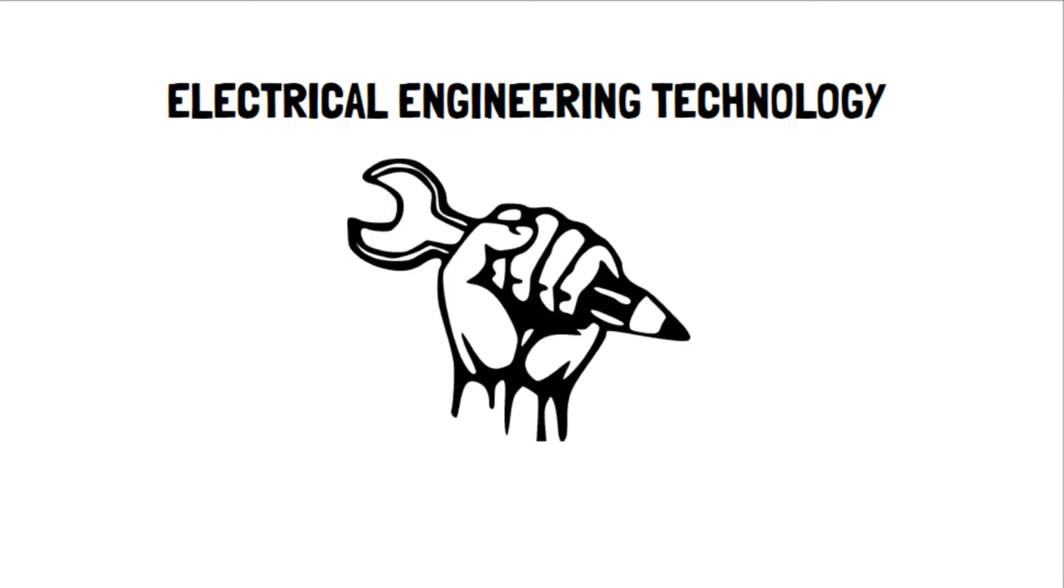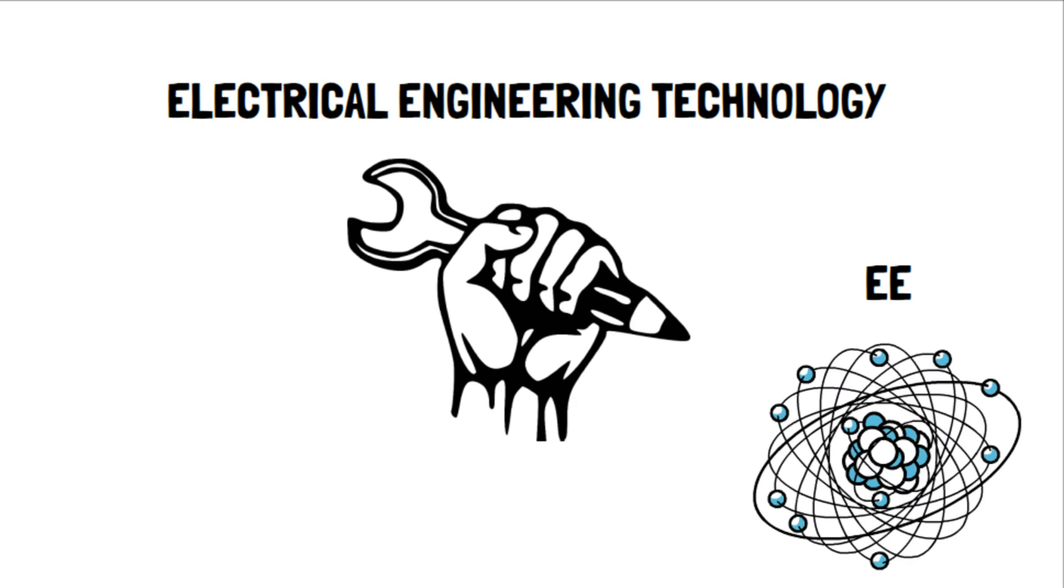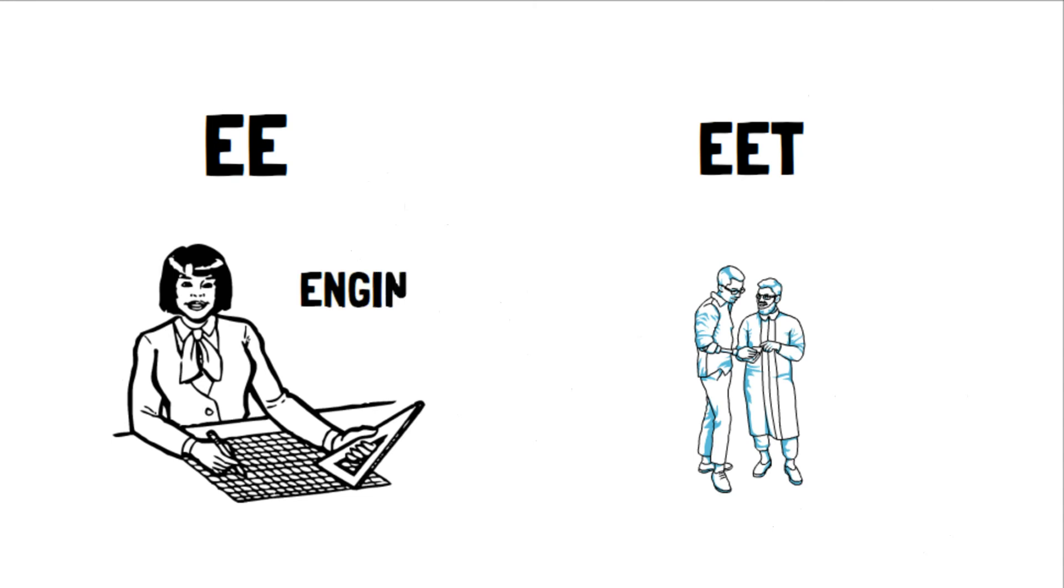Electrical engineering technology is a more hands-on field. While EE is focused on theory, EET is focused on the practical aspects of the EE field. Whereas an EE program prepares you to design and develop new products, an EET program is designed to help you to assist EEs in your work. For this reason, we call the graduates of an EE program engineers, while EET grads usually are technologists.